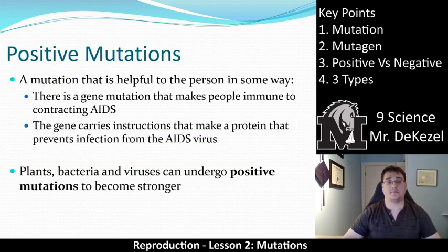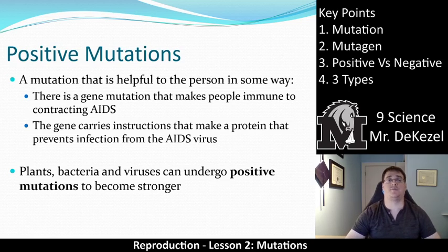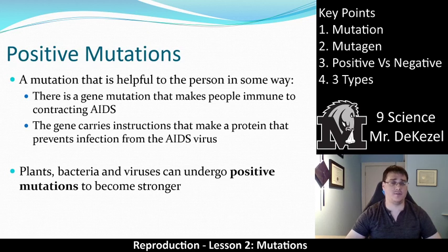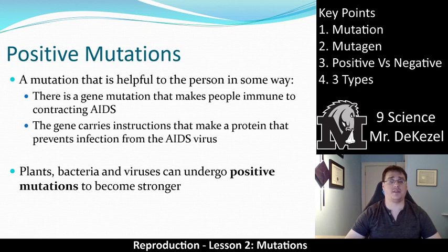Positive mutations are mutations that are helpful to a person. There is a gene mutation that makes people immune to contracting the AIDS virus — the gene carries instructions that make a protein preventing infections, so it doesn't allow the virus into the cells and you cannot get HIV/AIDS. Alternatively, plants, bacteria, and viruses can undergo positive mutations to become stronger. If you take too many antibiotics, they might not work anymore because the bacteria mutated positively — became stronger and resistant to the antibiotics. It is not good for you, but it is good for the bacteria. Viruses can also undergo positive mutations, which is why there are multiple flu and cold viruses that float around all season long, and the coronavirus may also be possible to mutate.